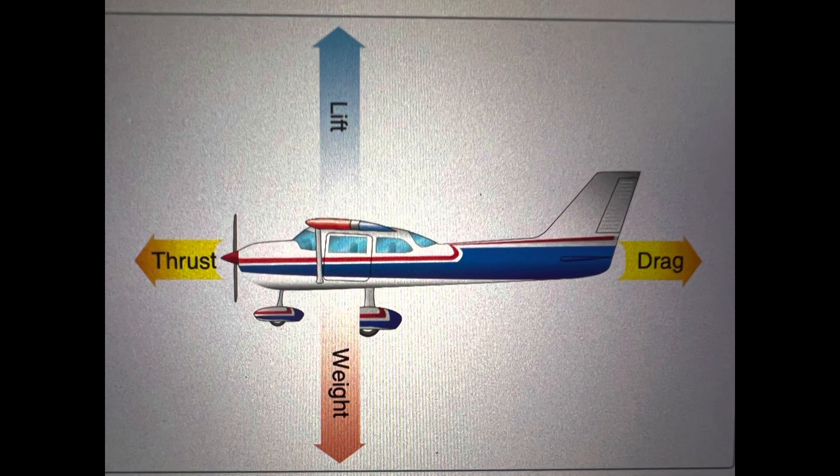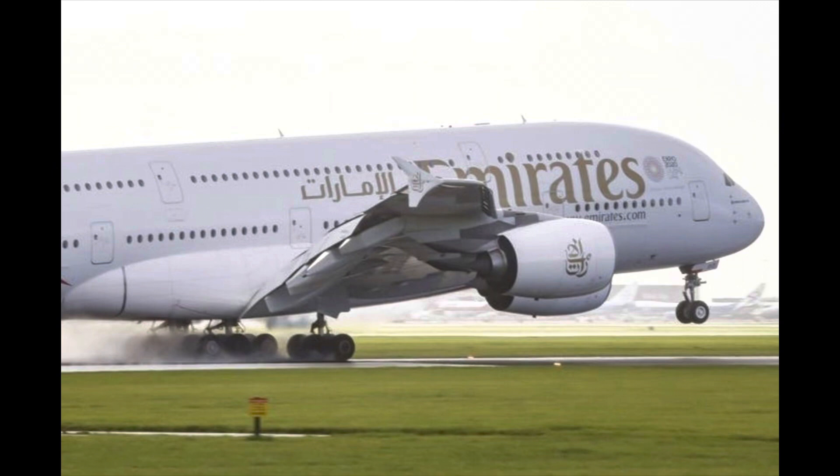The thrust force is produced by the propeller or plant. The drag force is produced by the disruption of airflow by the wings and other objects. The lift is produced by the dynamic effect of air on an airfoil. The weight is essentially the mass of the aircraft underneath the body, where the load is stored — for instance, where the baggage is stored. These are the four main forces acting upon an aircraft.